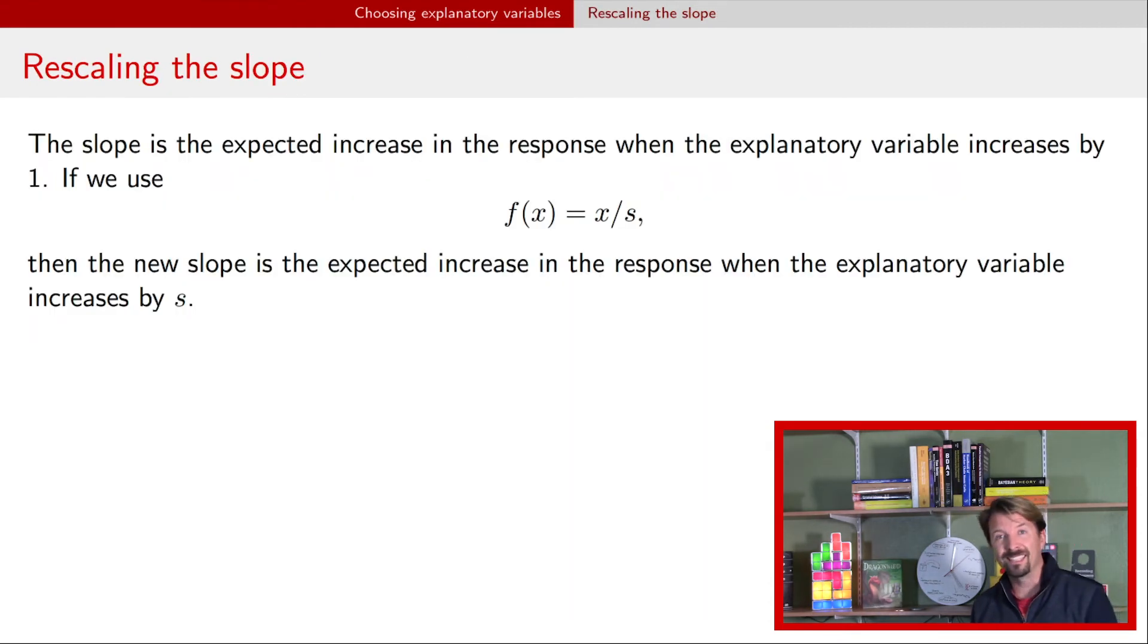Let's go through this last example. Last example has us rescaling the explanatory variable. Just to remind you, the slope is the expected response when the explanatory variable increases by one. And so now if we use this functional form here, we take the explanatory variable and divide by s and use that in a regression, then the new slope from that regression is the expected increase in the response when the explanatory variable increases by s.